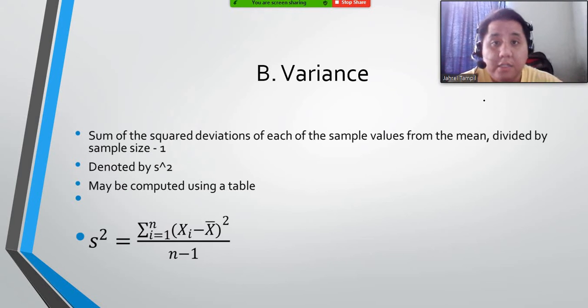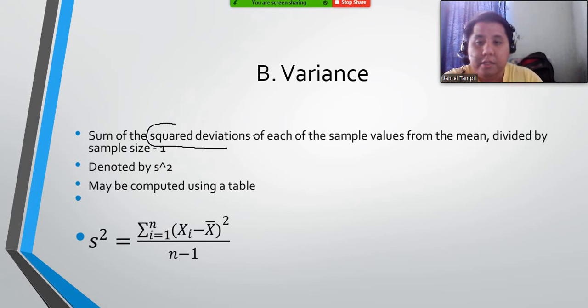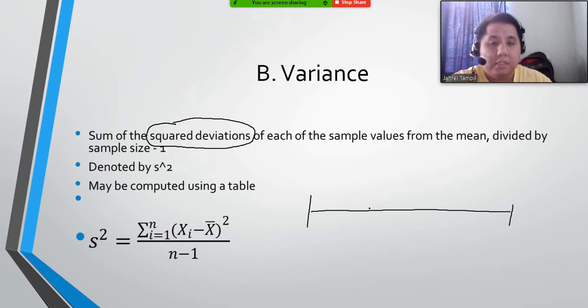Now, the variance has a unique feature because it is the sum of the squared deviations. So let's illustrate this one. Say, for example, this data point is our mean and these are the different data points.